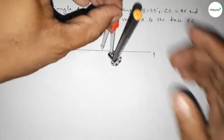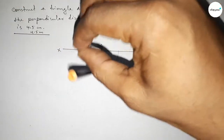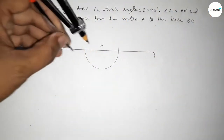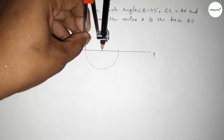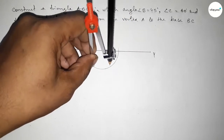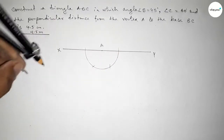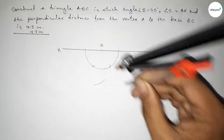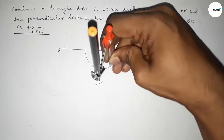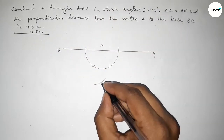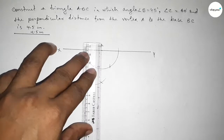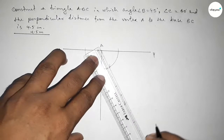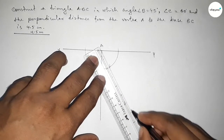Putting the compass on point A and taking any length, draw a semicircle. Then, putting the compass with the same length, cut arcs to construct perpendicular bisectors. Both curves intersect at a point, and joining these points gives us a perpendicular line.